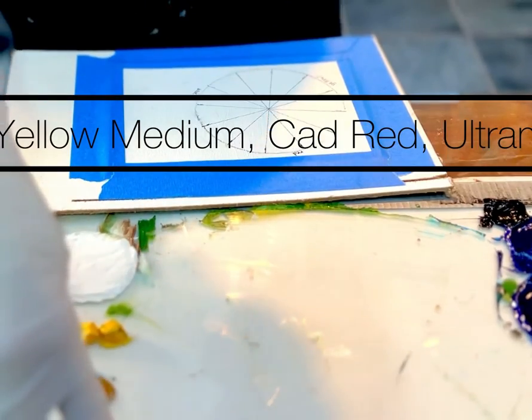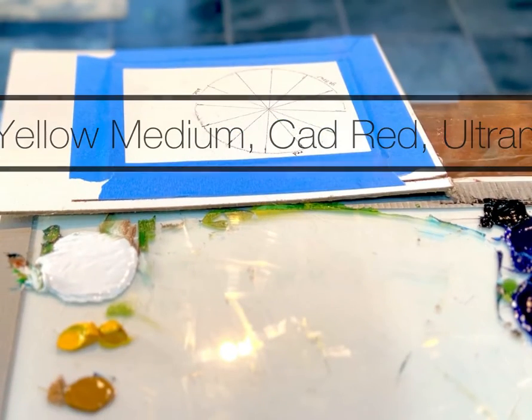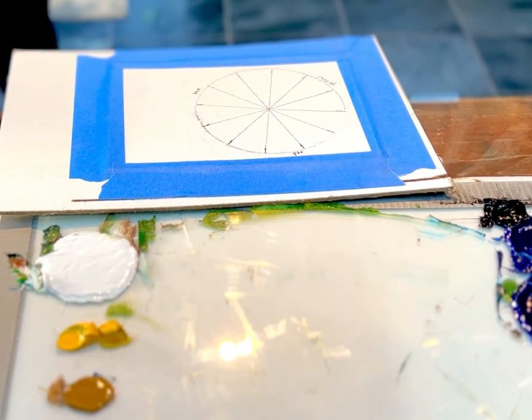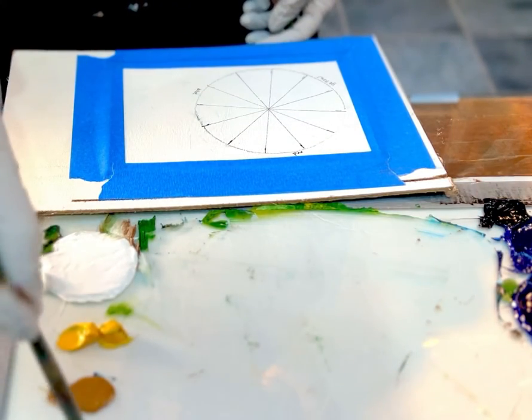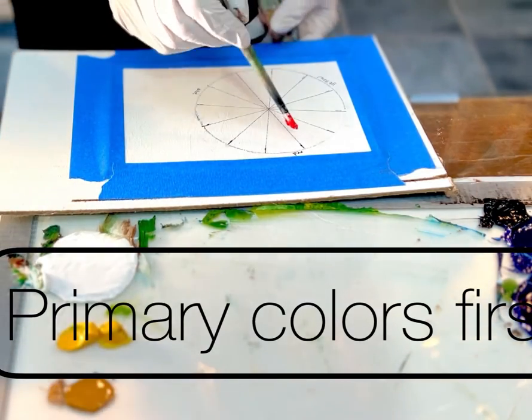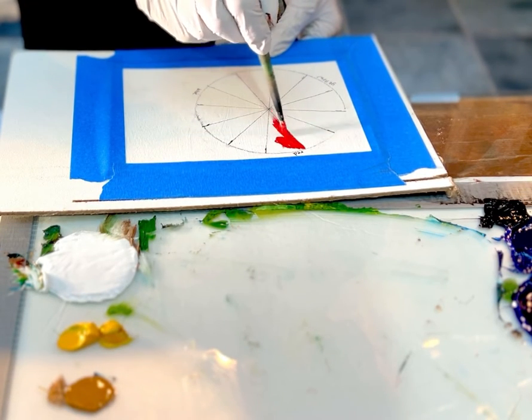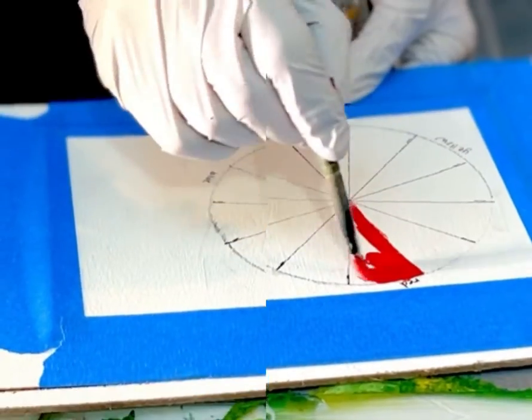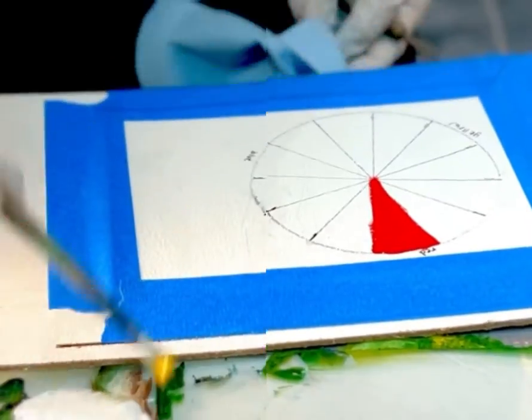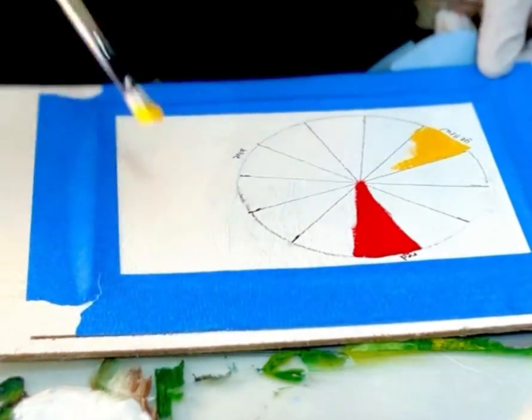I'm going to use whatever red I gave you, not alizarin crimson but your real red, and your ultramarine blue. And these are called what? Primary colors. Yeah, exactly. And you know why they're called primary colors? Because no other color can make them up. Exactly, you all are so smart. I probably should have started with yellow actually.